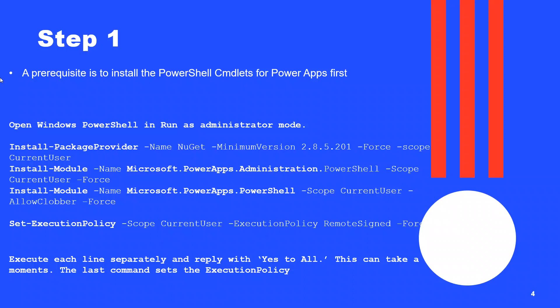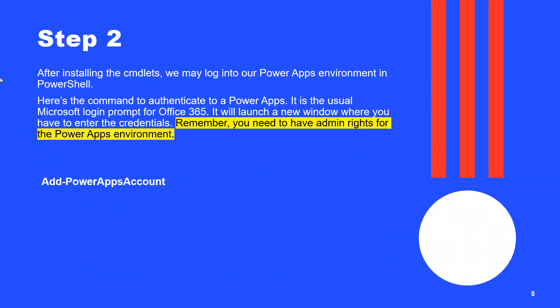Once you are done with the installation of modules and package provider, you need to run the Set-ExecutionPolicy command. After executing this command, wait for a few moments. Remember to execute each line separately and reply with 'S' to all prompts — this might take a few moments. After this, you need to log in to your Power Apps environment. The command to log in through PowerShell is Add-PowerAppsAccount.